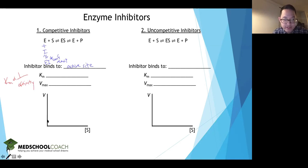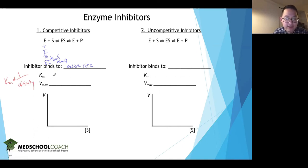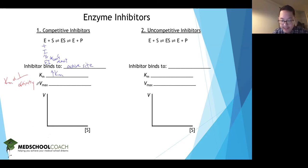Based on what we just discussed, with a competitive inhibitor the affinity decreases, so the KM is going to increase. That's correct — the decrease in affinity means KM increases. Next, we can talk about Vmax.